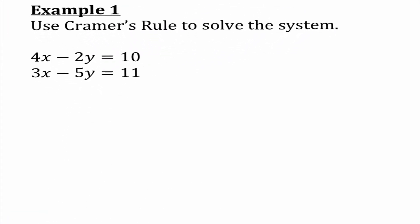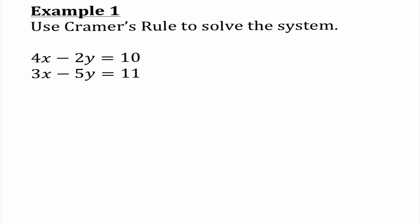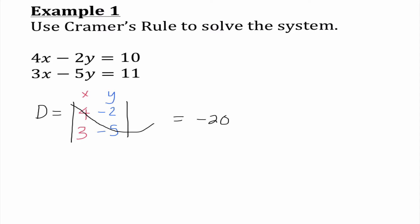Number one says use Cramer's Rule to solve the system. The first thing I'm going to find is determinant D. I'm putting this straight into determinant notation — it's like a coefficient matrix where the first column is x coefficients and the second column is y coefficients. Starting top left: 4 times negative 5 is negative 20. Mr. Determifish says subtract, baby. Negative 2 times 3 is negative 6. I end up getting negative 14 as our D value.